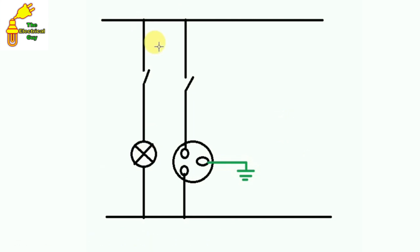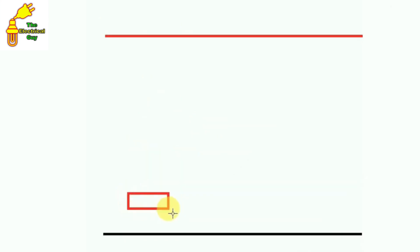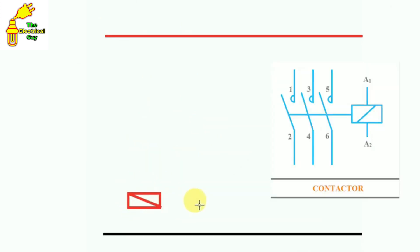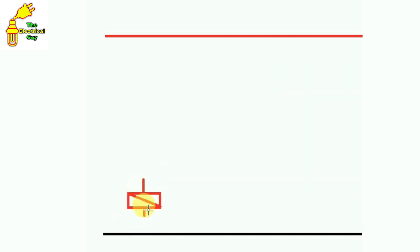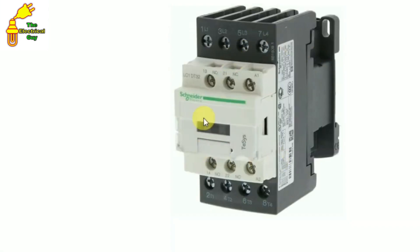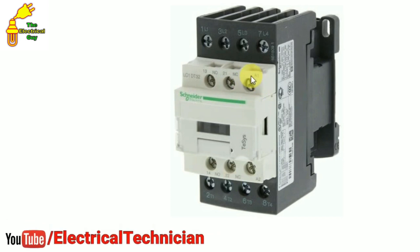Now we will take a contactor and learn how to do its connection. This is the symbol of a contactor, in which there are two terminals: one for phase supply and another for neutral supply. You have seen this type of contactor — this A1 terminal is the upper one at which we connect phase supply.